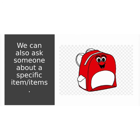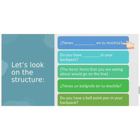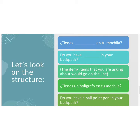We can also ask somebody if they have a specific item in their backpack. To do that, we ask: ¿Tienes ___ en tu mochila? For example, to ask if someone has a ballpoint pen, I would say: ¿Tienes un bolígrafo en tu mochila? — Do you have a ballpoint pen in your backpack? The item you are asking about goes on the line.